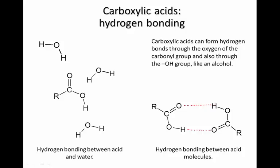When carboxylic acids are dissolved in water, the acid molecule is also able to form multiple hydrogen bonds with the water molecules. For instance, we could have a hydrogen bond between the carbonyl oxygen and a water hydrogen, between the hydrogen of the OH group and the oxygen of a water, and between the oxygen of the OH group and the hydrogen of another water. So each carboxylic acid is able to form quite a few hydrogen bonds with surrounding water molecules.